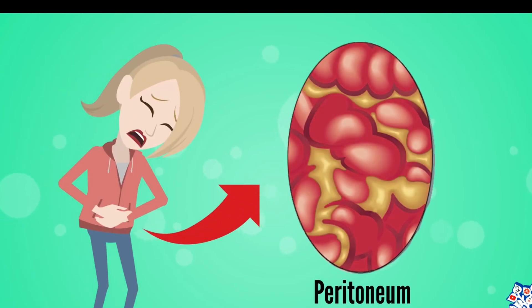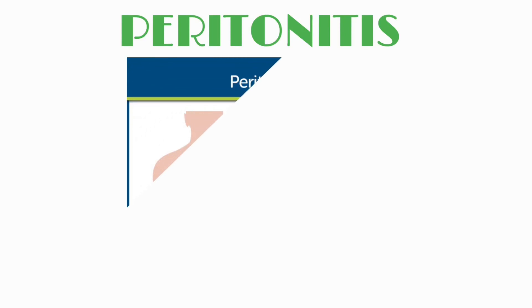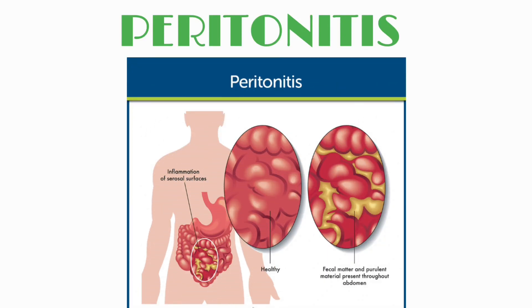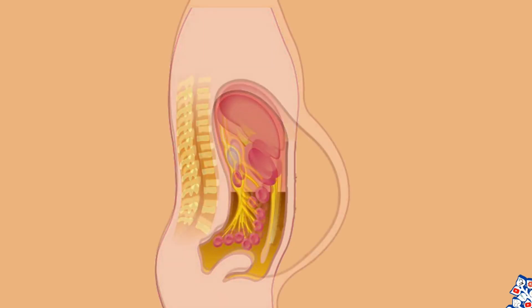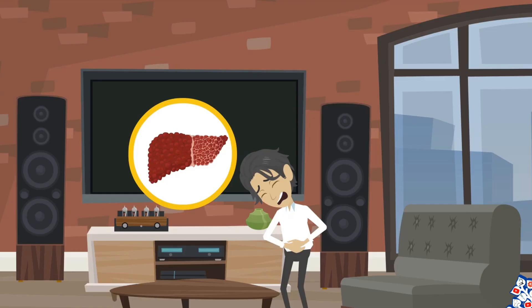Let's explore what it is, its causes, clinical features, complications, investigations, and management. Peritonitis is the inflammation of the peritoneum, the tissue lining the abdominal wall and covering the abdominal organs. It can become a life-threatening condition if not treated promptly.